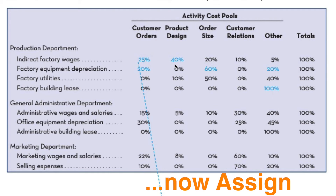In the real world, we would go to each production manager and supervisor and ask how they'd estimate costs are used up across these different activities. These are really just estimates — the best guess from a manager with experience in that department. Obviously you could ask why 25% and not 26.3%, but that extra bit of accuracy is not worth the cost. In the end, these truly are just estimates, and the estimates could be wrong. That is a drawback of activity-based costing — it relies heavily on judgment and estimates.